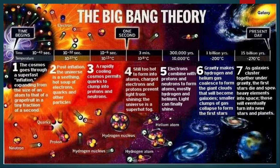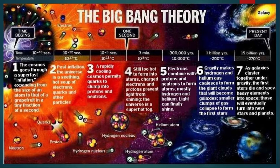Three minutes later, the universe was still too hot to form atoms. Charged electrons and protons prevented light from shining, making the universe a super-hot fog. During that time, there was no light — it is also called the dark ages of the universe. From this point, nucleosynthesis begins.